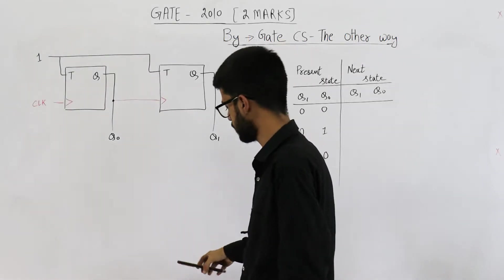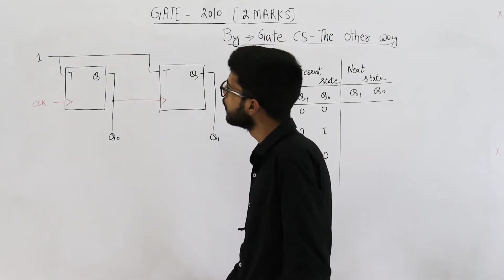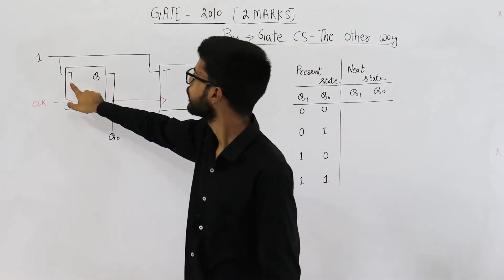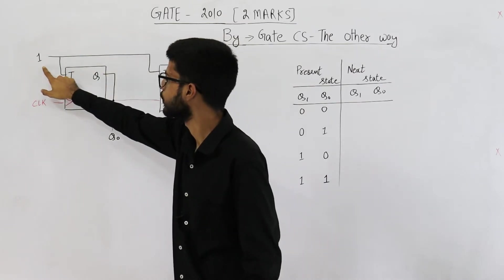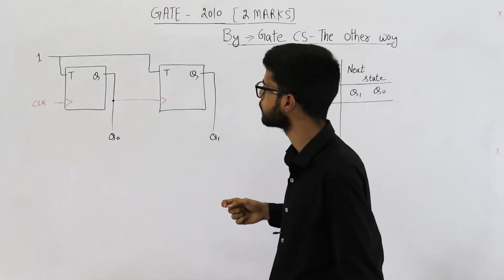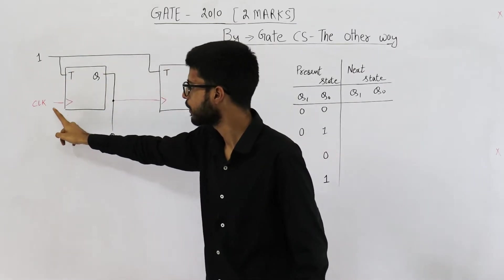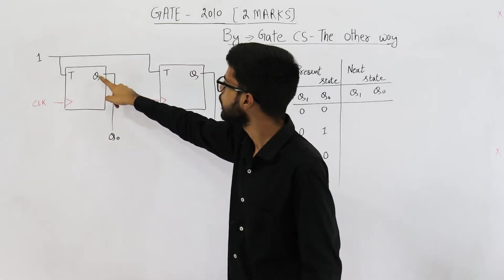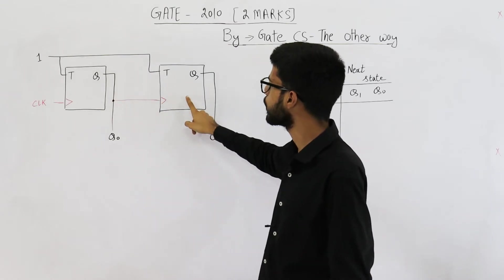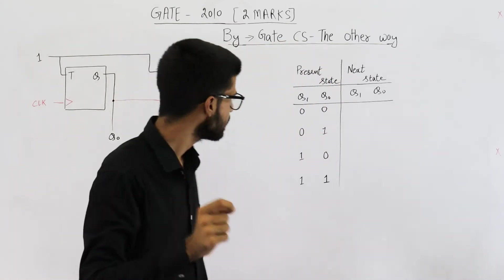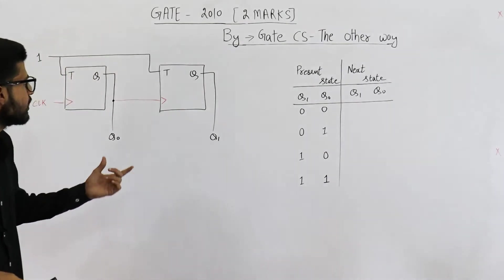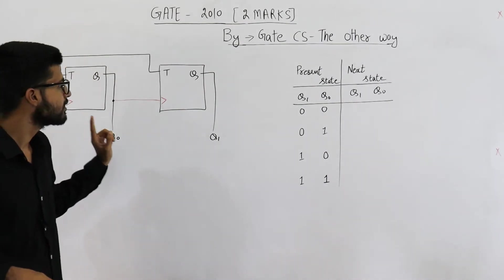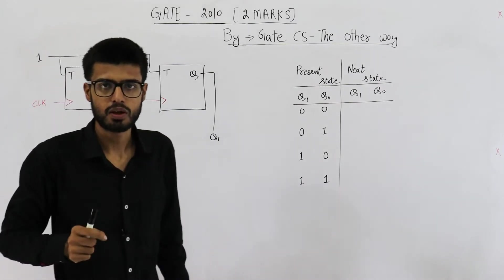The counter given in the question is made using two T flip-flops and the value of these T inputs is 1. Second thing is we are providing clock only to the first flip-flop. The output of this flip-flop is used as clock to the second flip-flop. That means this is an asynchronous counter — specifically, an asynchronous binary down counter.